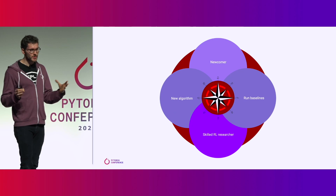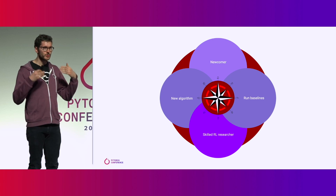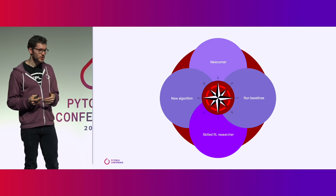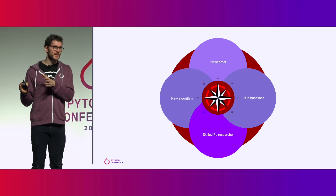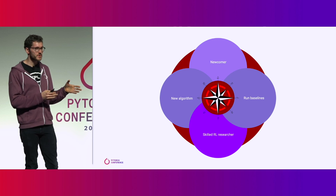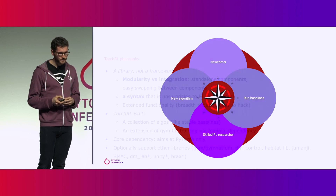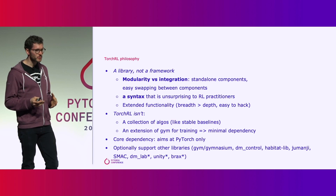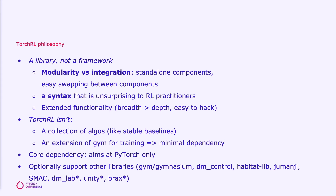The breadth we wanted to cover was everything from newcomers to skilled RL researchers, and from running baselines to developing new algorithms — which is not an easy task. The first thing I was told when I started was that people wanted a library and not a framework. One interpretation was that people wanted something very modular, with standalone components you could pick up without using the whole stack of primitives, and components you could easily swap into the algorithms you were developing.